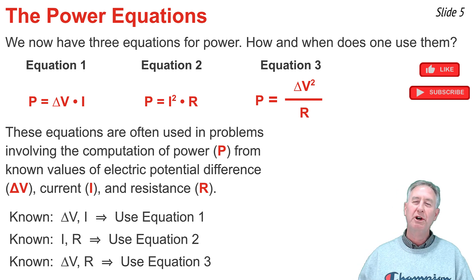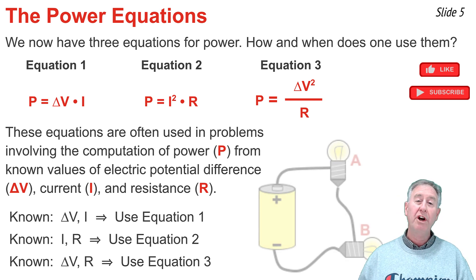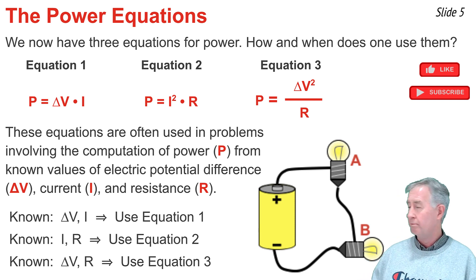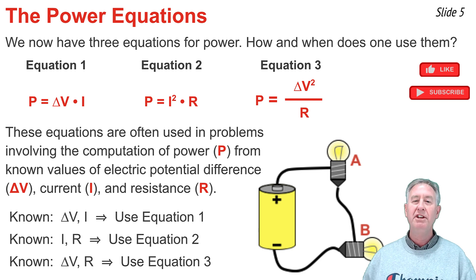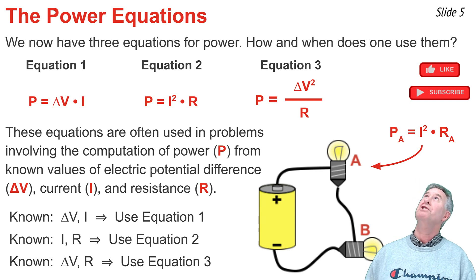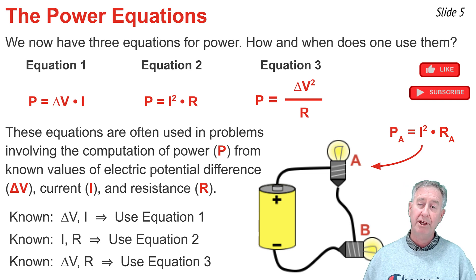Perhaps the most difficult part of such physics word problems is knowing which power you're solving for. Are you solving for the rate at which work is done upon the charge by the battery, or the rate at which energy is delivered to the bulb? And if there's more than one bulb, is it bulb A or bulb B? If you need to determine the power of bulb A, then take the current in bulb A and multiply it by the resistance of bulb A.